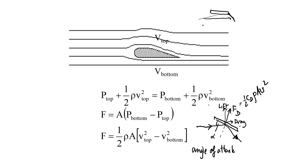The lift force equals A, the surface area of the wing, times the difference in pressure, which equals one-half rho A times (V_top squared minus V_bottom squared). In real life, we found that V_top is not much different from V_bottom, so the lift created by Bernoulli's equation alone is not that much. However, in actual cases, the wing makes a small angle of attack — it tilts slightly upward — so the airflow collides with the wing and creates a drag or retarding force proportional to velocity squared. That is the main principle creating lift on an airplane.